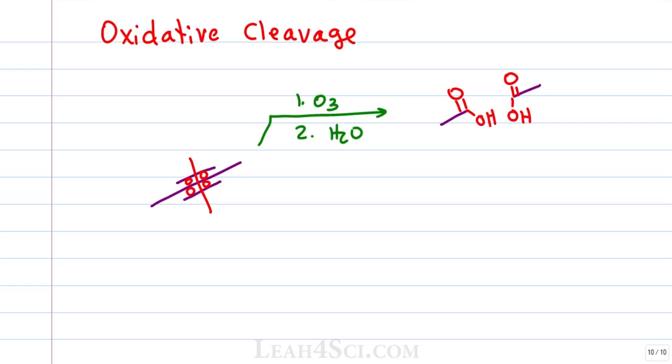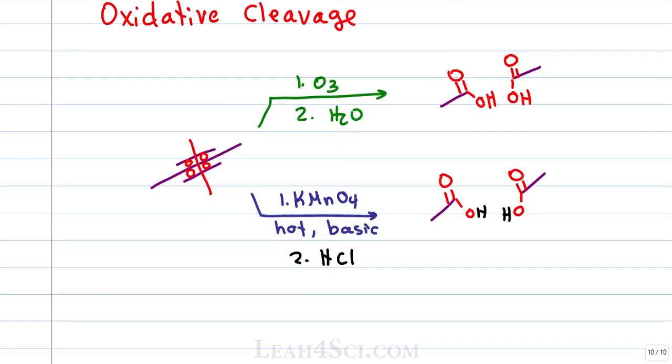We get the same product for KMnO4 except that since we're using hot basic conditions, KOH, we can't form a carboxylic acid in a basic solution, the base will deprotonate. So for step one, we would just show a carboxylate with an O- for each one but then in step two, we add an acid like HCl and that protonates the carboxylate to give us that same carboxylic acid product.